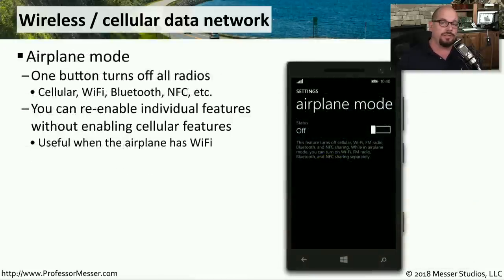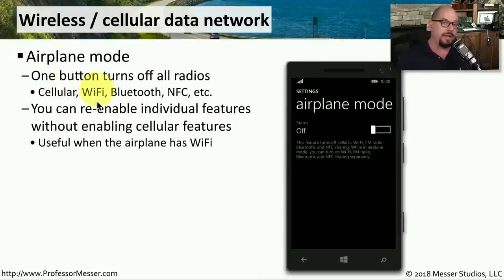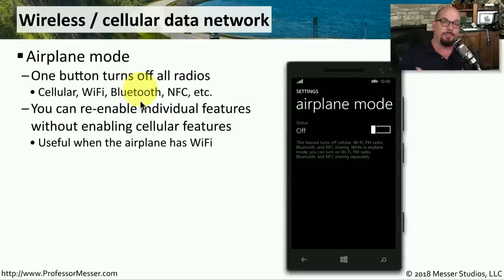There are many different wireless networks that you can enable or disable on your smartphone. There's, of course, your cellular network for communicating to your mobile provider. There's 802.11 Wi-Fi network connectivity. There's probably Bluetooth radio inside of your smartphone. And many smartphones also include near-field communication, or NFC networks.